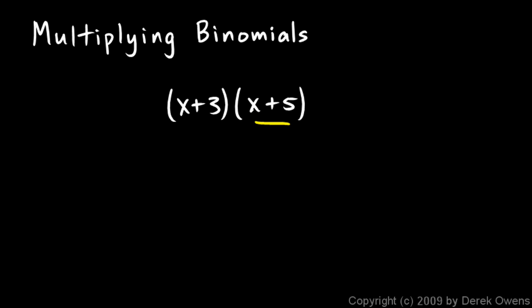x plus 3 is a binomial and x plus 5 is a binomial, simply because they each have two terms, and that's what a binomial is, something with two terms.